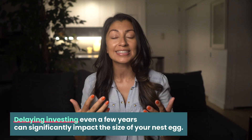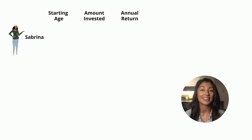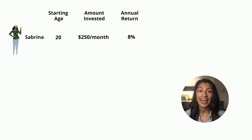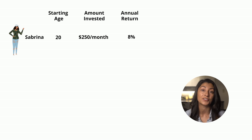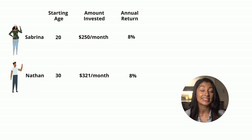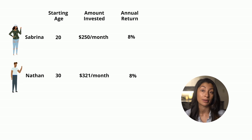In fact, generation after generation, one of the greatest financial regrets we all share is not getting started with investing earlier in life. Delaying investing even a few years can significantly impact the size of your nest egg. Let me show, not tell. Sabrina paid off her credit card debt and instead of a one-time investment of $1,000, she decides to diligently invest $250 a month starting at age 20, earning an 8% return. Nathan, on the other hand, didn't begin investing until he turned 30 — he decides to invest $321 a month, also earning an 8% return.